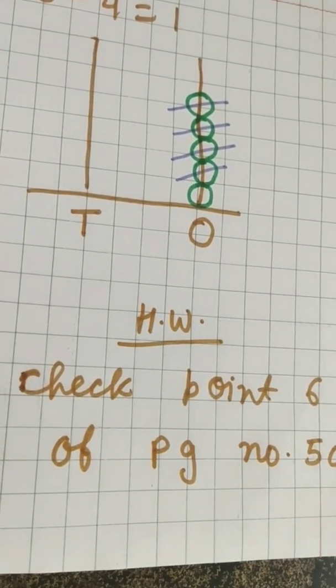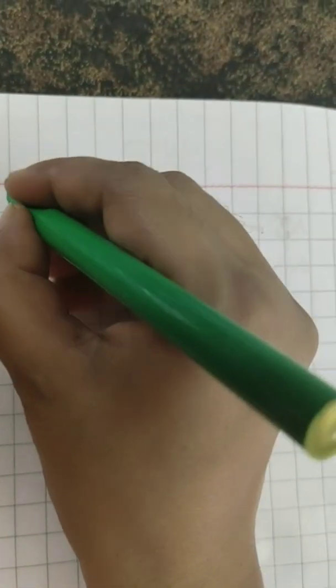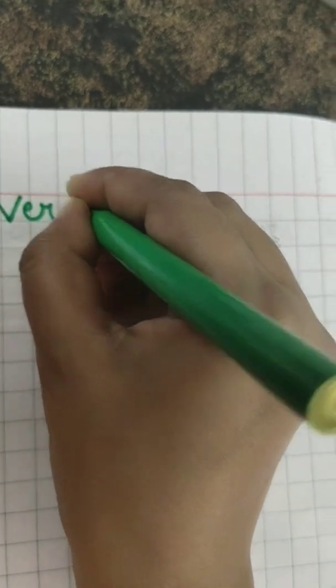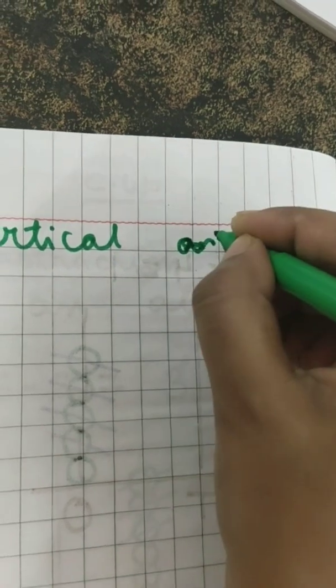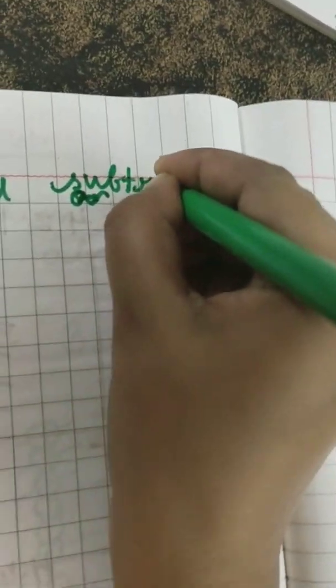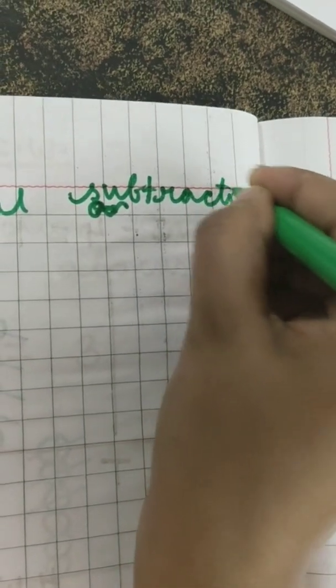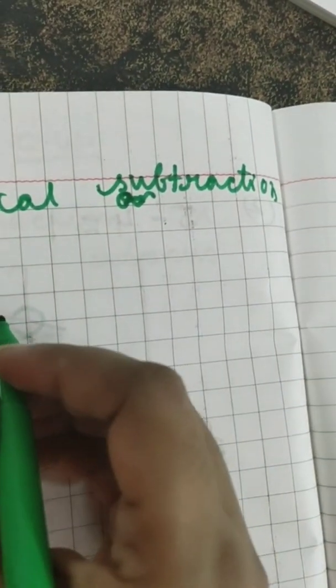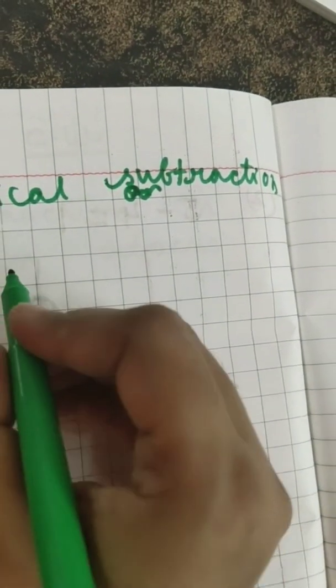Now it's time for doing vertical subtraction. Do you know what is vertical subtraction? Just like our vertical addition, we will do vertical subtraction also. Nothing to do, we have to just write like this.